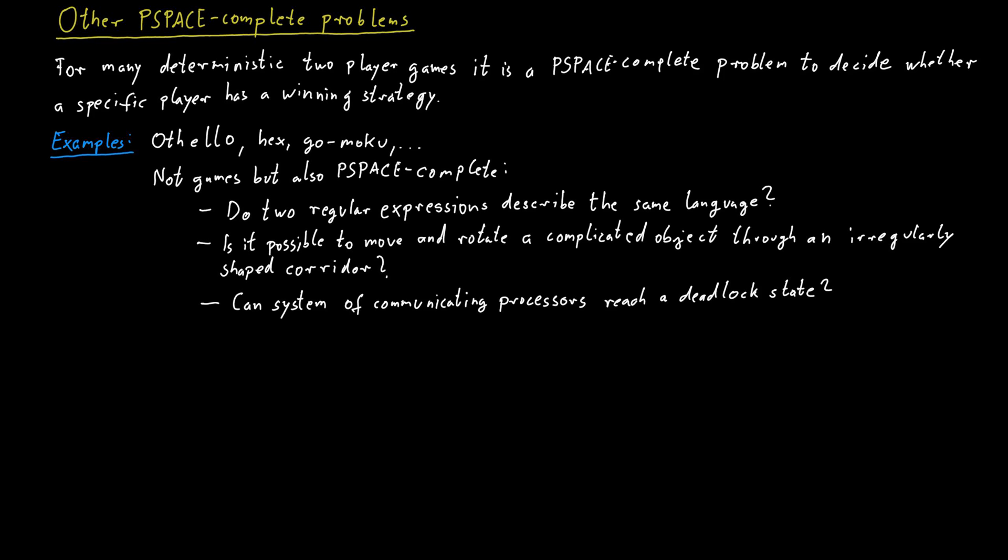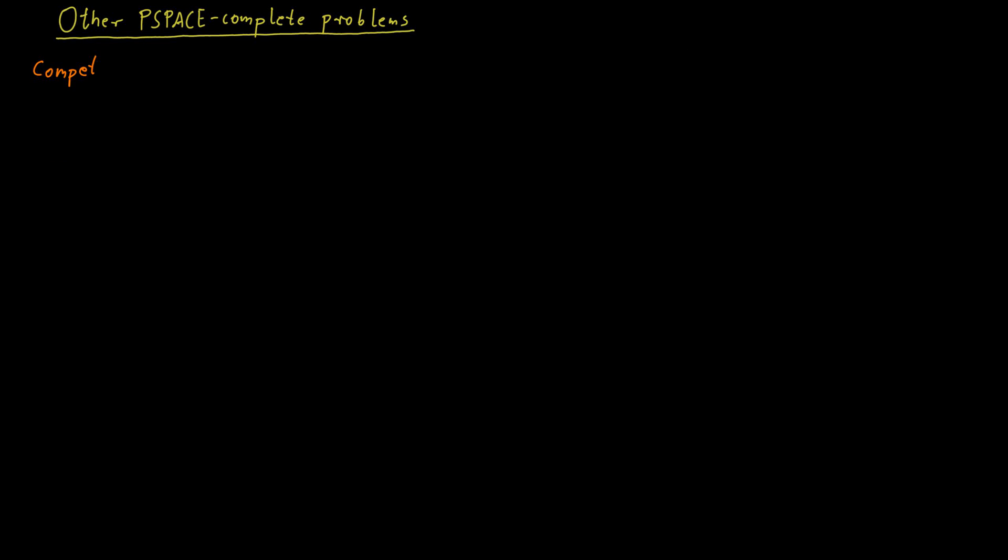We want to discuss one more PSPACE complete problem in a little bit more detail and actually prove that that particular problem is PSPACE complete, so you see an example of how such proofs work. The problem we want to talk about is competitive facility location. The input is a graph with positive node weights and a target value B.